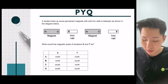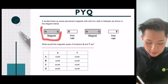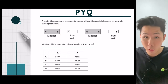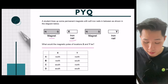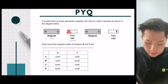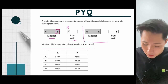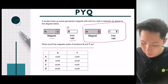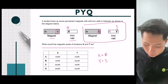A student lines up some permanent magnets with soft iron nails in between, as shown in the diagram. What would be the poles of X and Y? We know that the hard magnets have their own poles already defined, but the iron nails are soft magnets, so they will only be magnetized when placed in the magnetic field. For them to attract each other, X has to be of the opposite pole — meaning X has to be north pole. In the second diagram, since the adjacent soft iron pole is south, Y will therefore be south pole. So the answer is X equals north pole, Y equals south pole. My answer should be B.